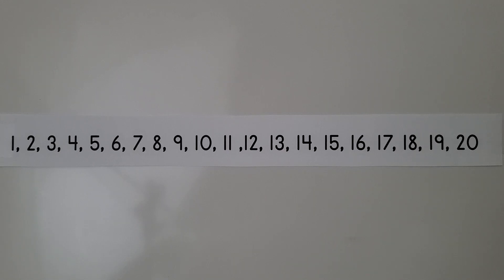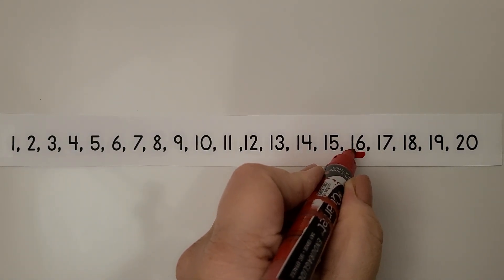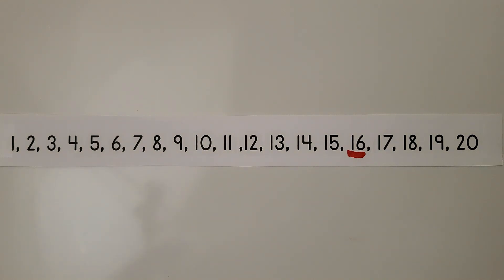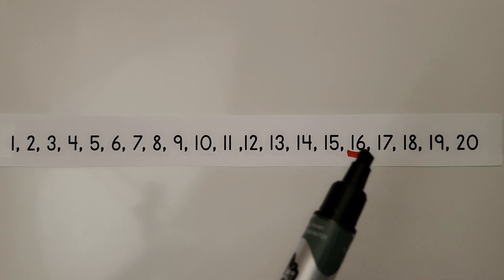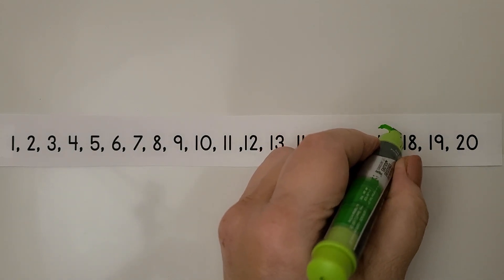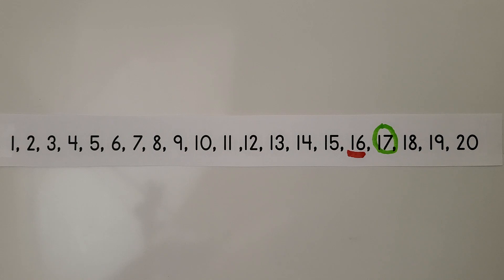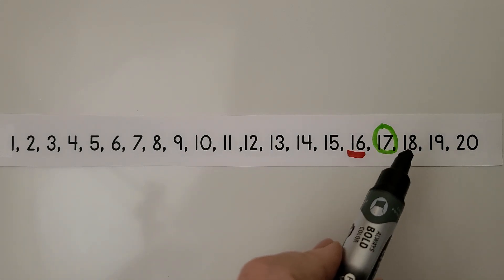Here are the numbers to 20 in counting order. Knowing the order of numbers can help us count and help us to know which number is greater or which number is less. We can choose one of these numbers and draw a line under it. Let's choose 16. 16 is 1 greater than 15, and it's 1 less than 17. 17 is 1 greater than 16. And we can count on from 16. We say 16, 17, 18, 19, 20.